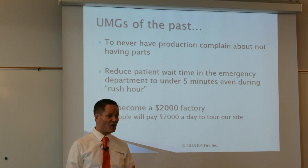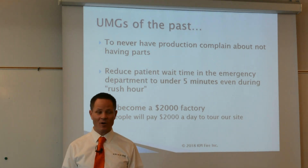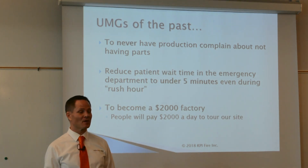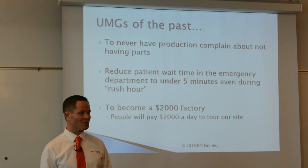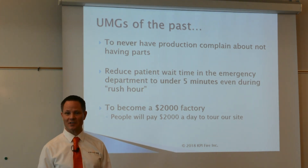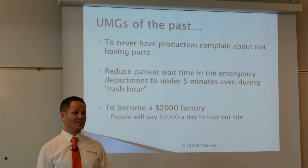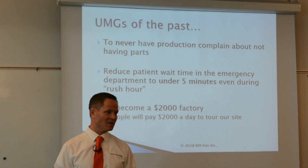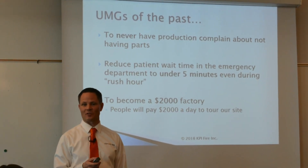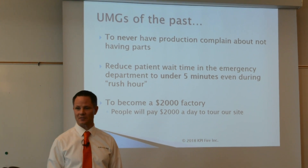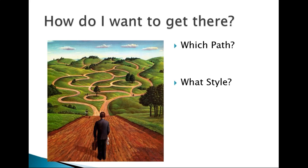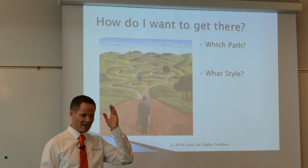A 'two-thousand-dollar factory' means a factory so excellent that companies pay $2,000 a day to tour it — like AutoLiv here in Utah, which charges that for tours because they're that good. That was our UMG for the mattress company. There's a destination — the UMG — but there's also a style: we can get there being top-down and dictatorial, or we can bring everyone along and succeed as a team.